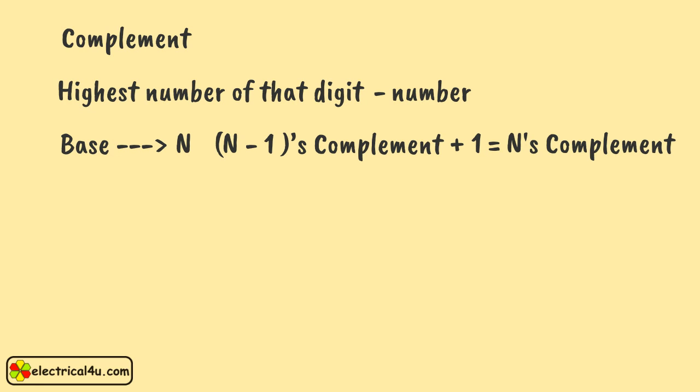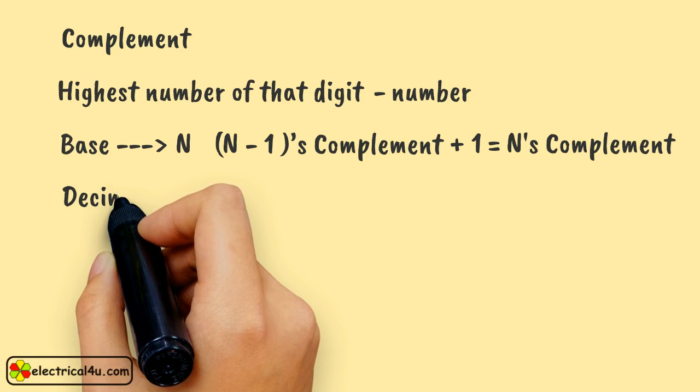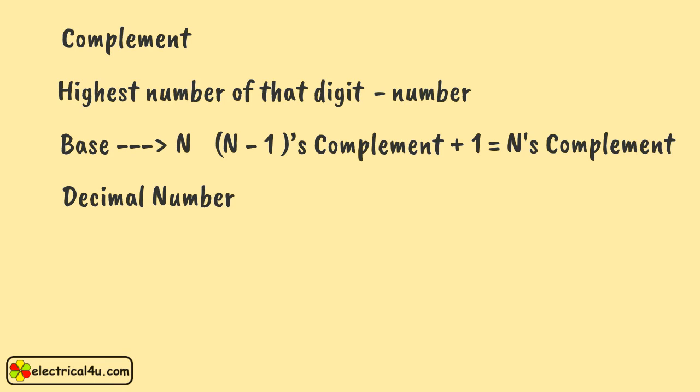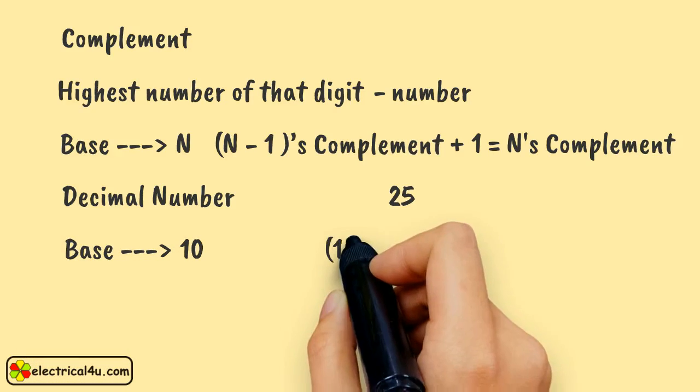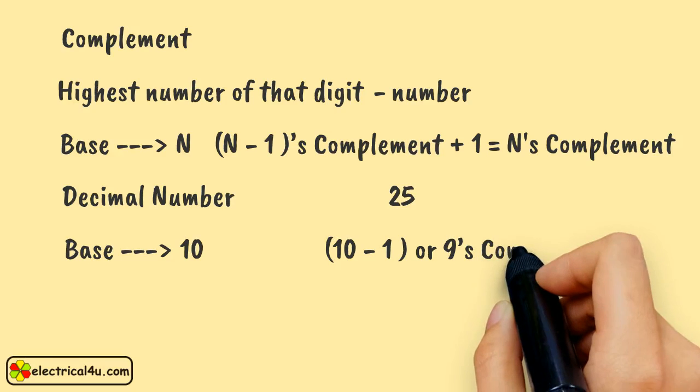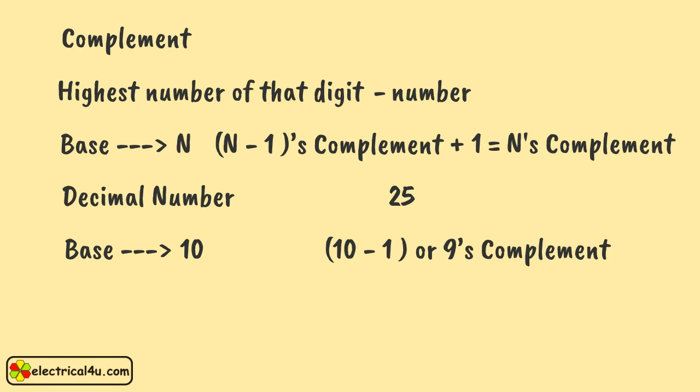For example, let us start with decimal number because we are mostly familiar with that number system. Let us take a number 25. The complement can be found out in two ways, and since it has a base of 10, it will be called as 10-1, that is 9's complement. The method is to subtract the number from highest number of that digit.